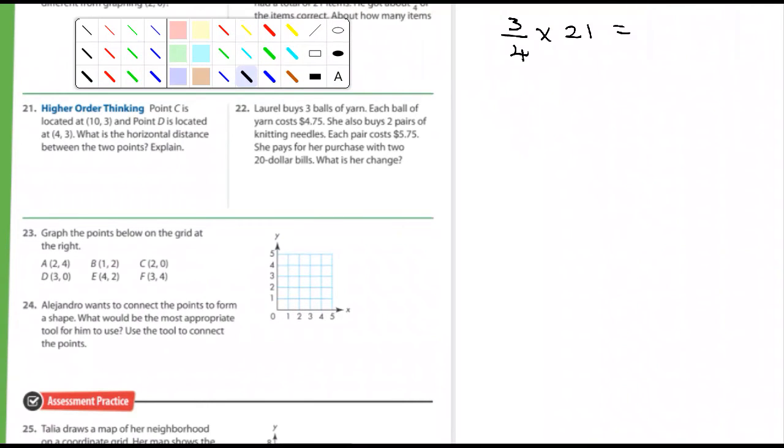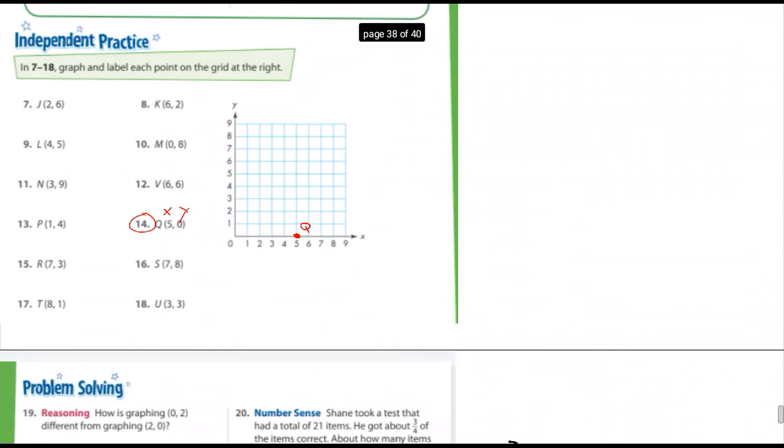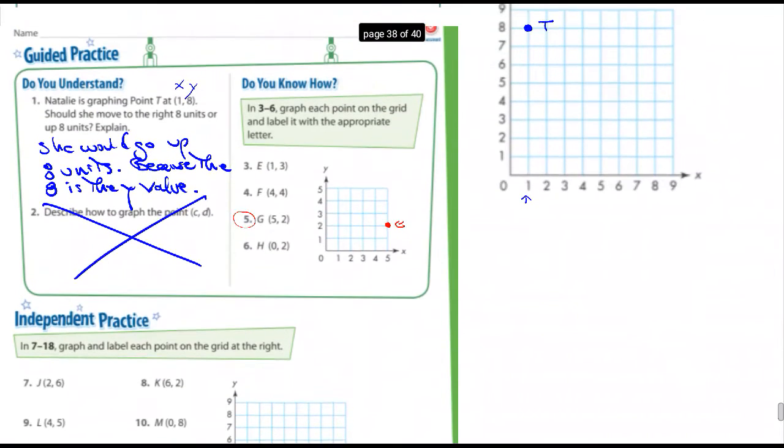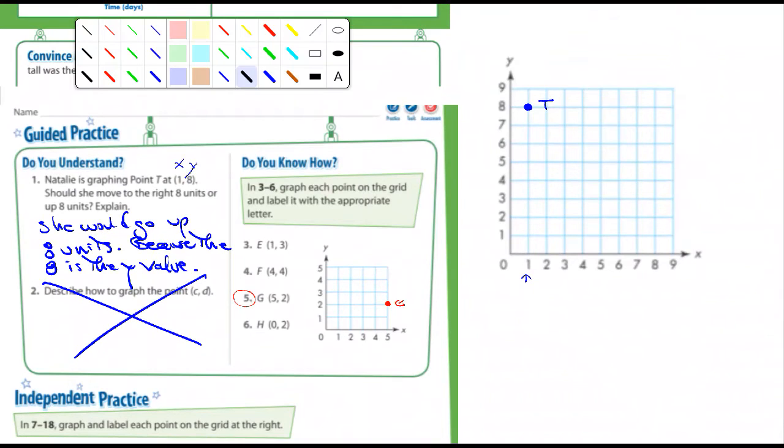Number 21. Point C is located at 10, 3. Point D is located at 4, 3. What's the horizontal difference? Horizontal distance between the two points. I want to make sure you understand this question. So I'm going to label two points on this graph. I'll use this larger one here. Just for example, you guys pay attention. I'm going to put a point, let's say a point right here. And I'm going to say a point right here. The question is, what's the horizontal difference?